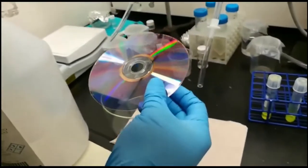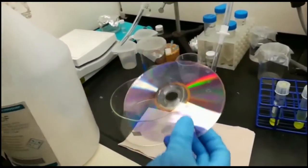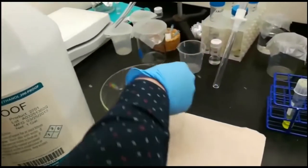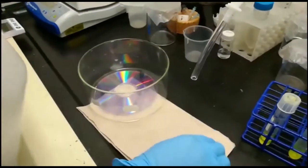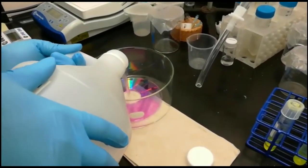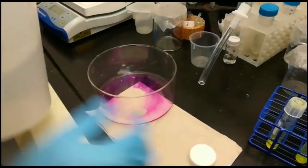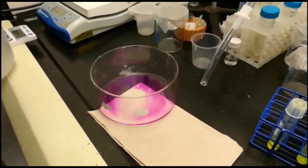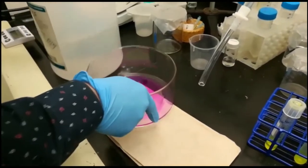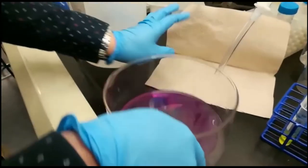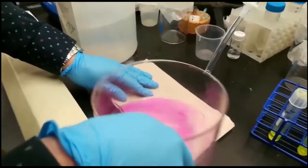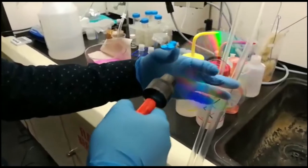So we want to use ethanol to wash off this organic dye. We pour ethanol and as you can see the color becomes red because the organic dye has been washed off. In this way we can expose the grating structure in the DVD disc.